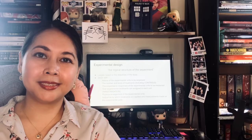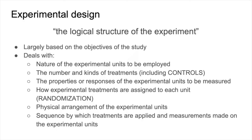Before writing your methodology, you have to first establish your experimental design, which is the logical construct of your experiment. This is largely based on your objectives, and it contains the following features. First, the nature of the experimental units to be employed. An experimental unit is the entity subjected to an intervention independently of all other units. This could be an organism, a type of tissue, a bodily fluid, and so on.